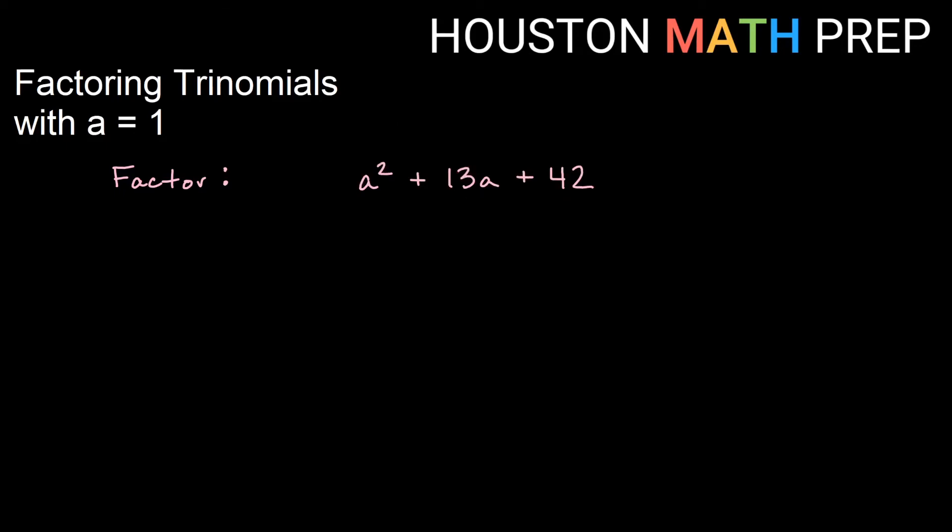All right, last example here. We're just using variable a. Don't be distracted from the fact that our coefficients are also called a, b, and c. So here actually a is 1, b is 13, and c is 42. Just making sure that we aren't distracted by the fact that I'm now using a as a variable. So a times c here is 42, and b is 13. And we need numbers that multiply to give us 42, and the same numbers add to give us 13.